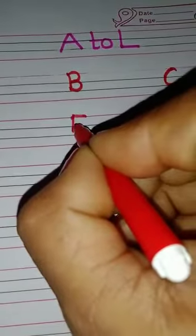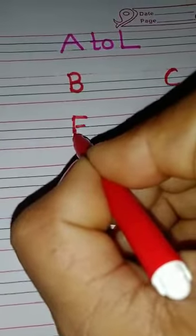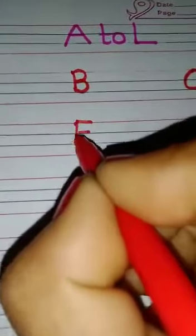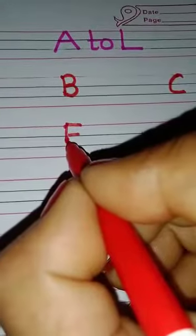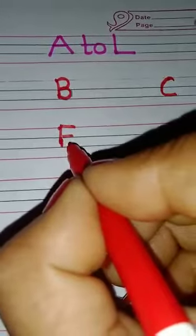Standing line, join sleeping lines — capital alphabet F. F for fish. Join small curve, standing line, sleeping line — capital alphabet G. G for grapes.